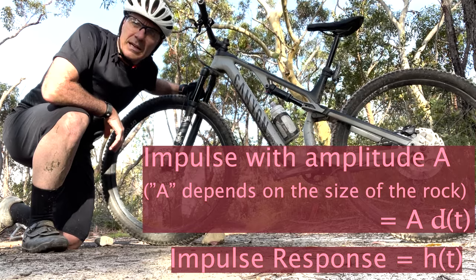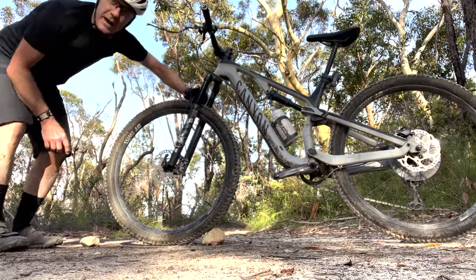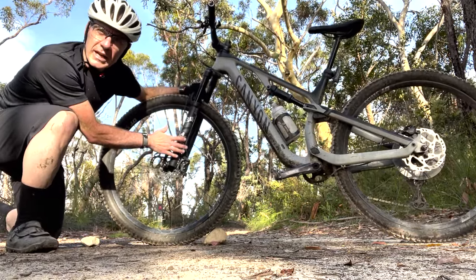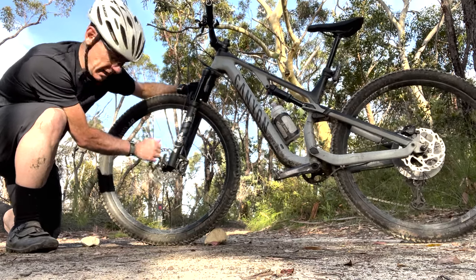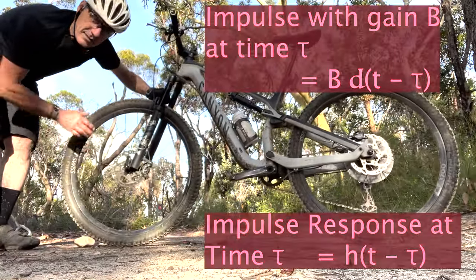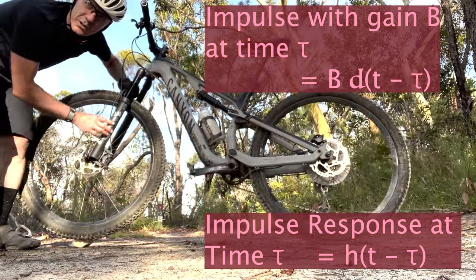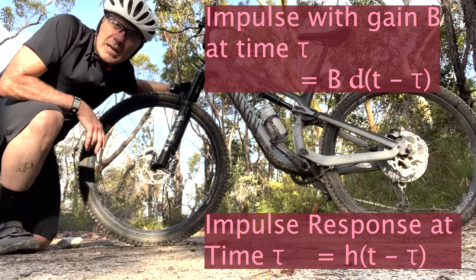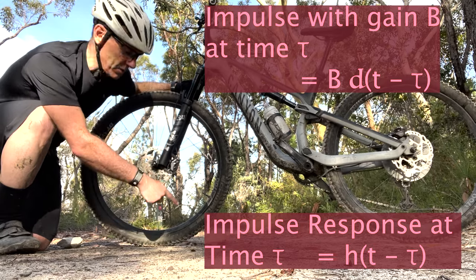Now let's think about what happens if there's another rock. The forks have responded to the first rock, and if they have returned to steady state when they hit the second rock, exactly the same thing will happen — there will be an impulse, the forks will compress, and then they will return to the steady state.